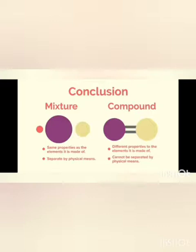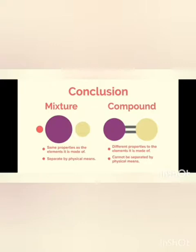It's time to conclude the lecture. A mixture shows the properties of its constituents, that is the elements it is made up of, while the components of a compound lose their identity and form a new substance having entirely different properties. The components of a mixture can be separated by simple physical methods, but the components of a compound cannot be separated by physical means.